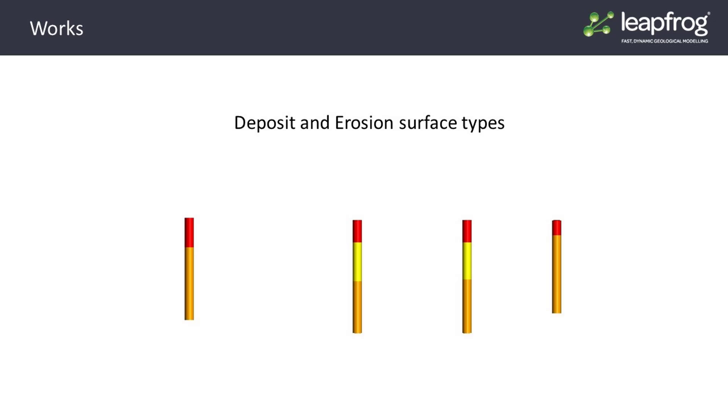For both deposit surfaces and erosion surfaces, we can take a single lithology code, red for example, and tell LeapFrog to find the points at which the red lithology contacts either above or below against other lithologies. In this case, it contacts the orange unit and the yellow unit. LeapFrog extracts points at these locations and then puts a surface through these points.